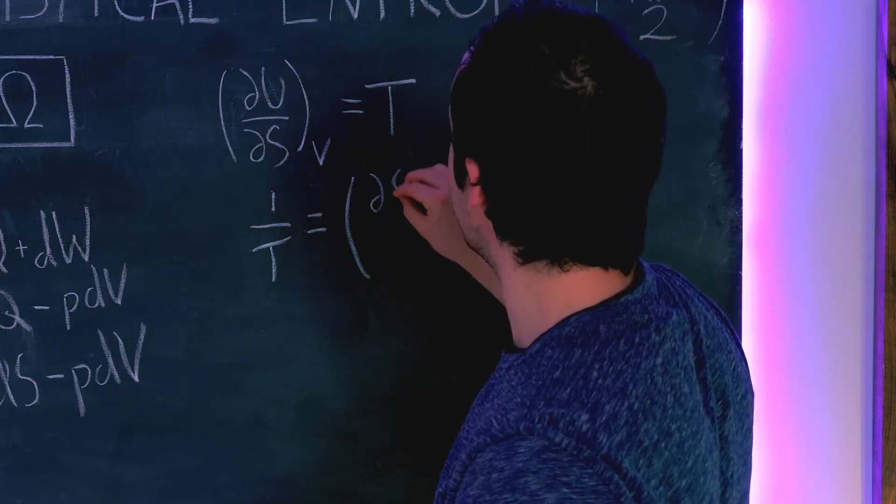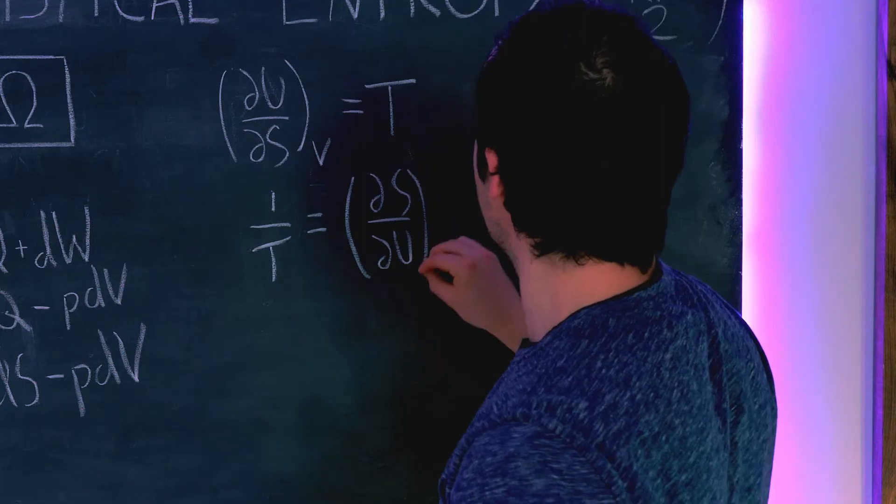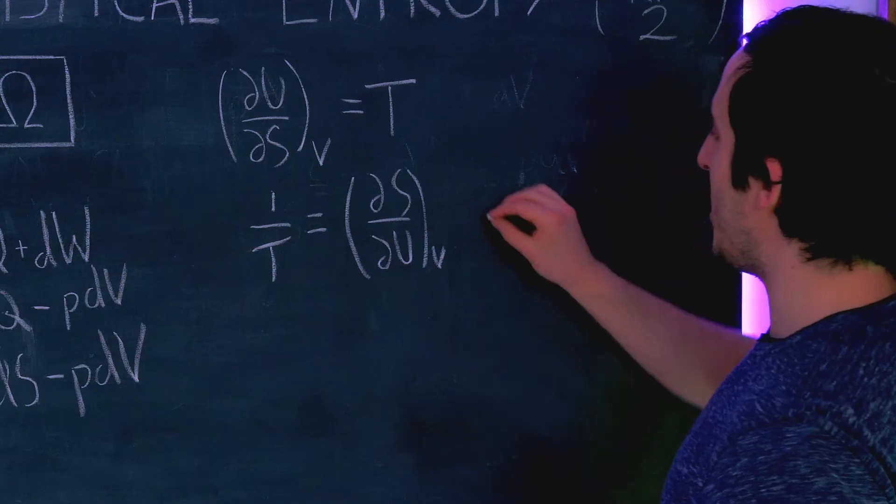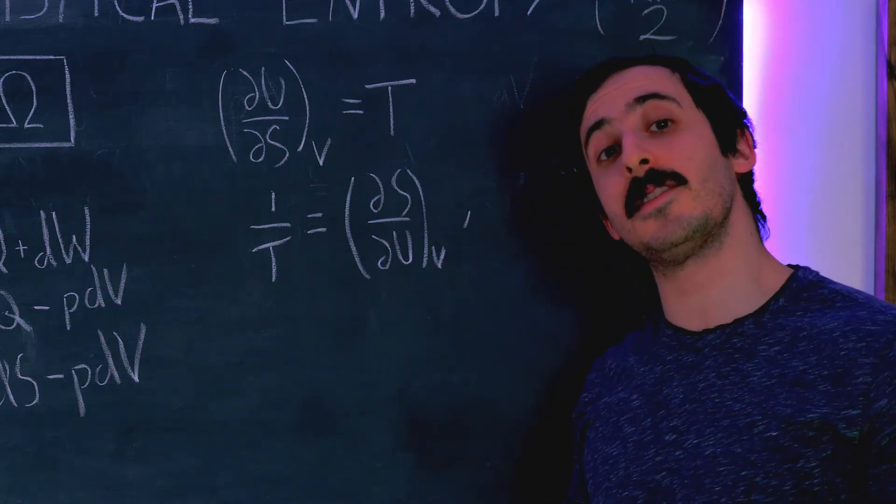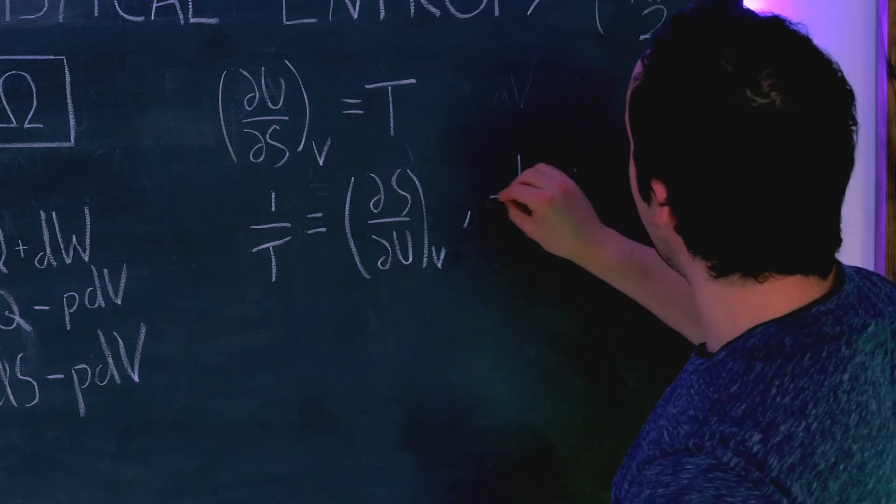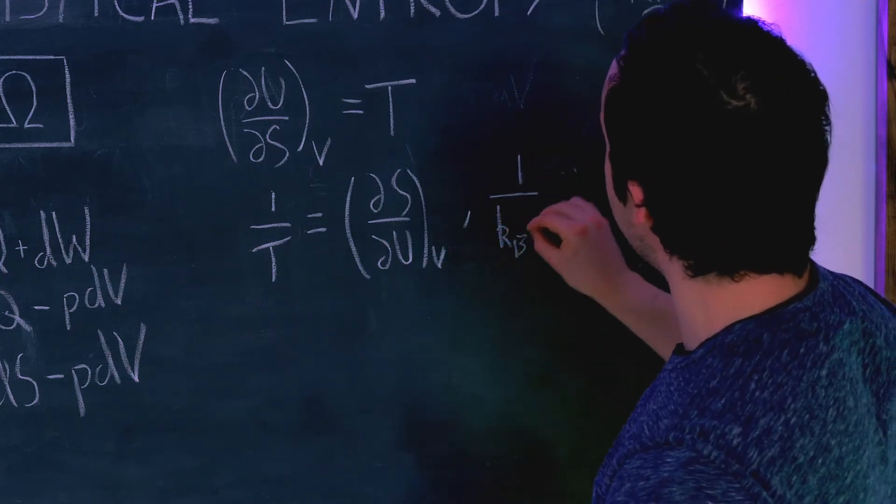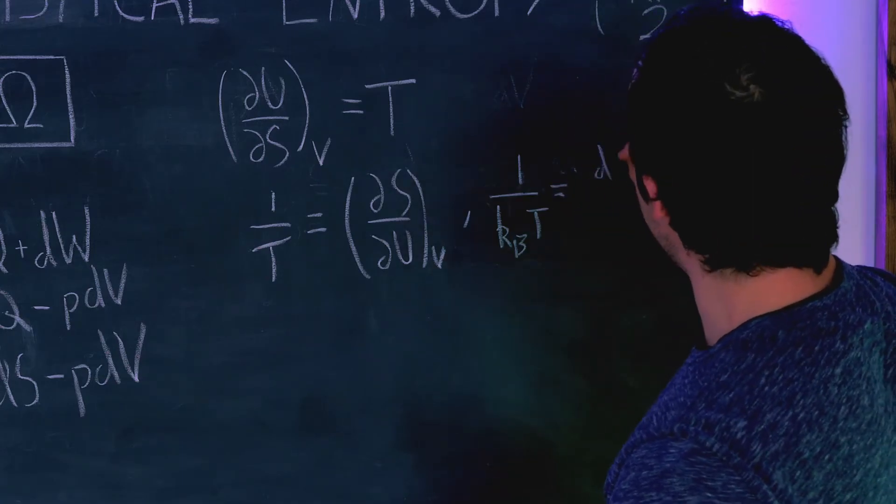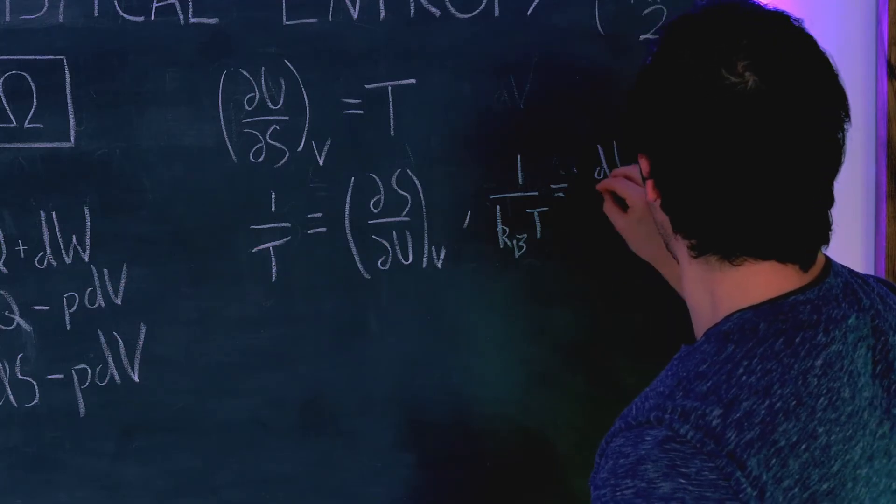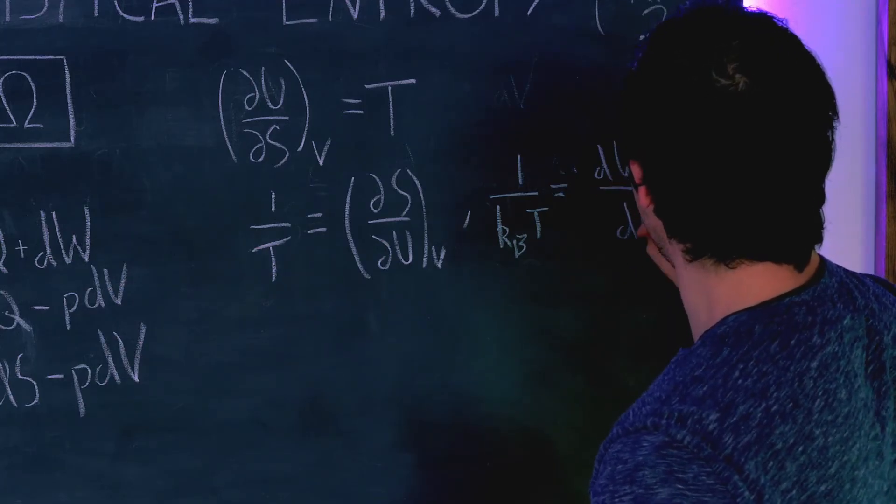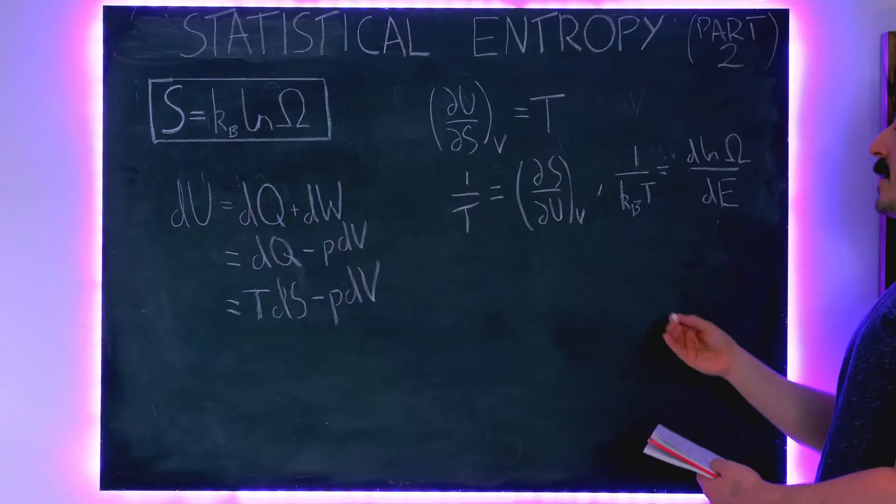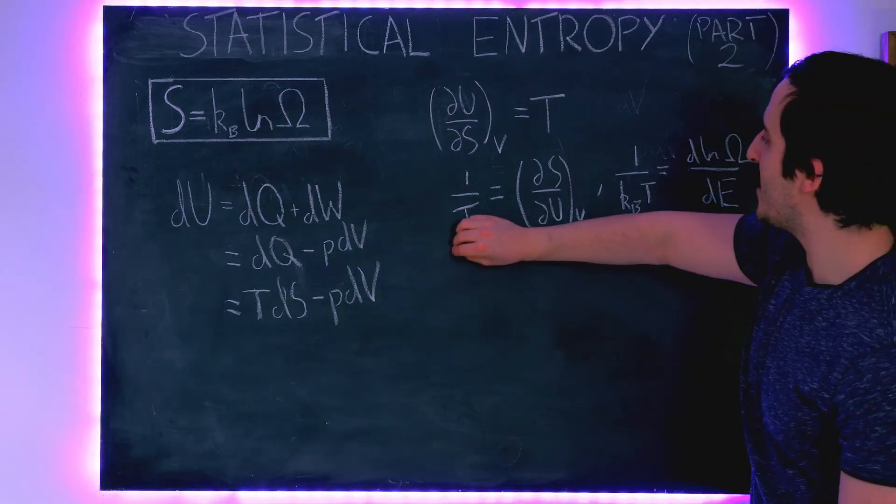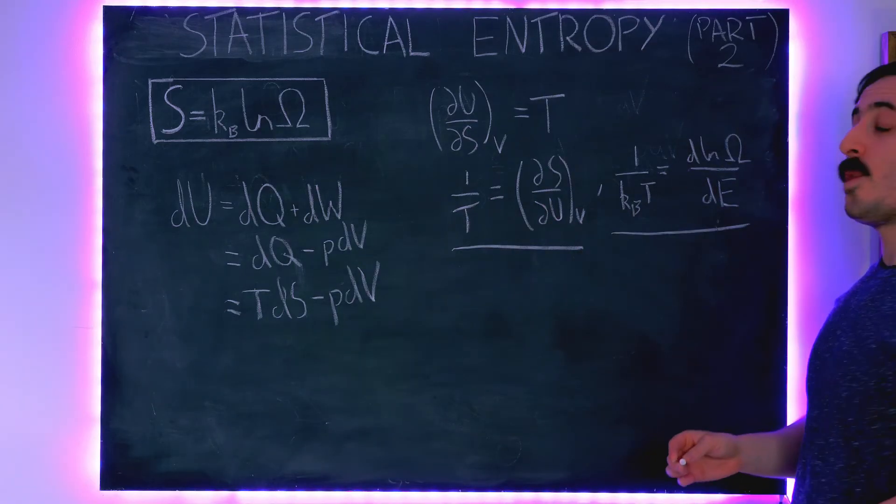And we're nearly there because in an earlier video if you go back and look at a statistical definition for temperature the formula we arrived at there is 1 over kB T is equal to d ln Ω by dE where E is the energy of our system. So this is the formula we derived when we were looking at a statistical definition for temperature and this formula we have derived with our thermal definition of entropy.